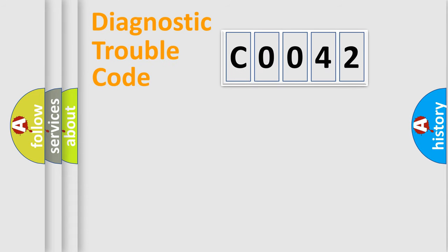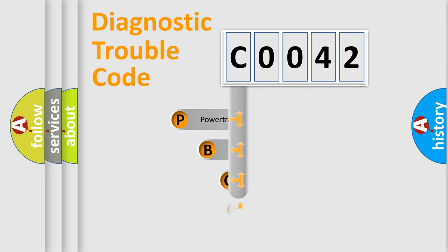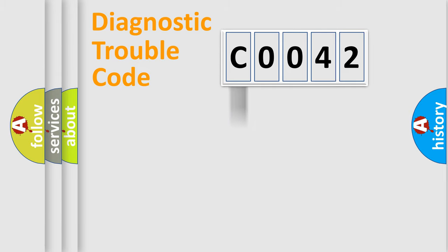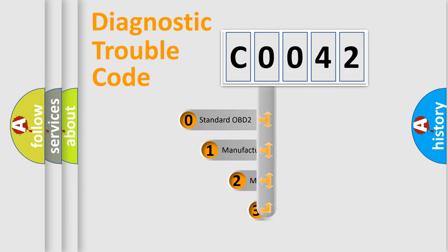Let's do this. First, let's look at the history of diagnostic fault code composition according to the OBD2 protocol, which is unified for all automakers since 2000. We divide the electric system of automobile into the four basic units: Powertrain, Body, Chassis, and Network. This distribution is defined in the first character of the code.